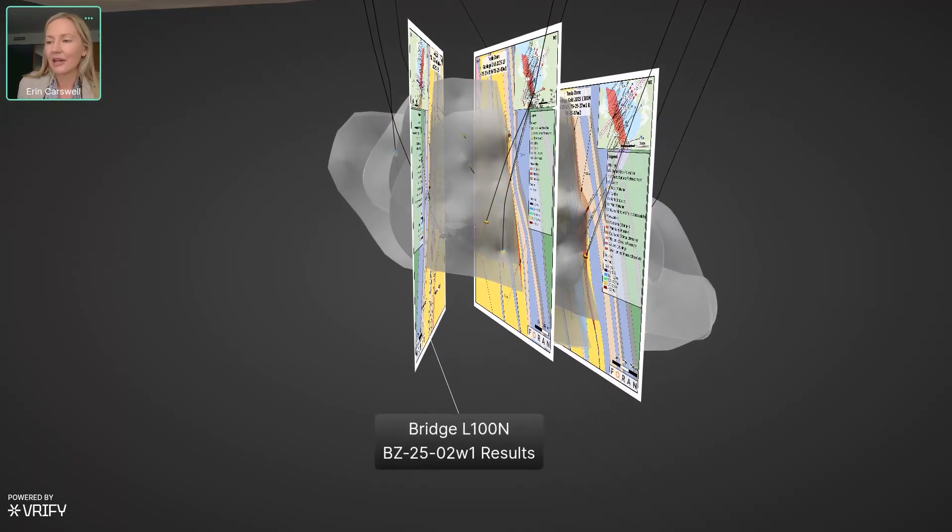Now we're going to have a quick look at BZ2502 wedge one. Now, this was a hole that was originally intended to test the bridge zone, but we did actually make a beautiful Tesla intersection in this hole. And again, with some really nice copper.